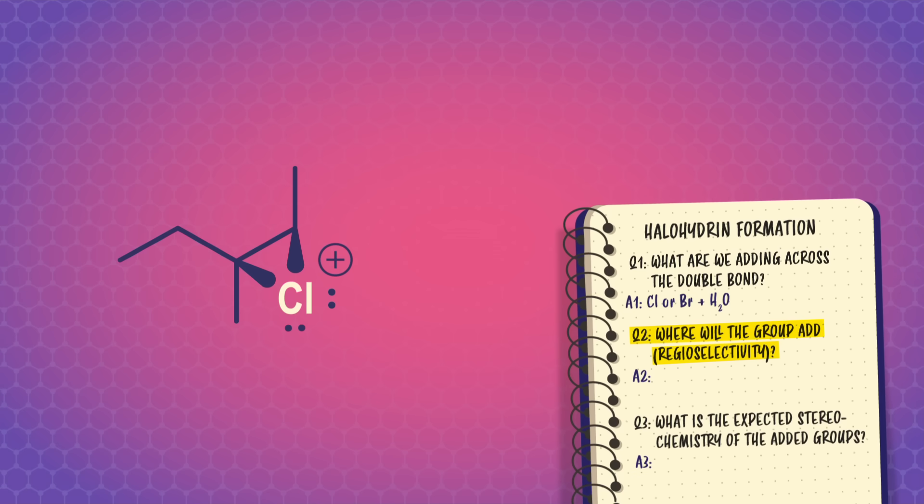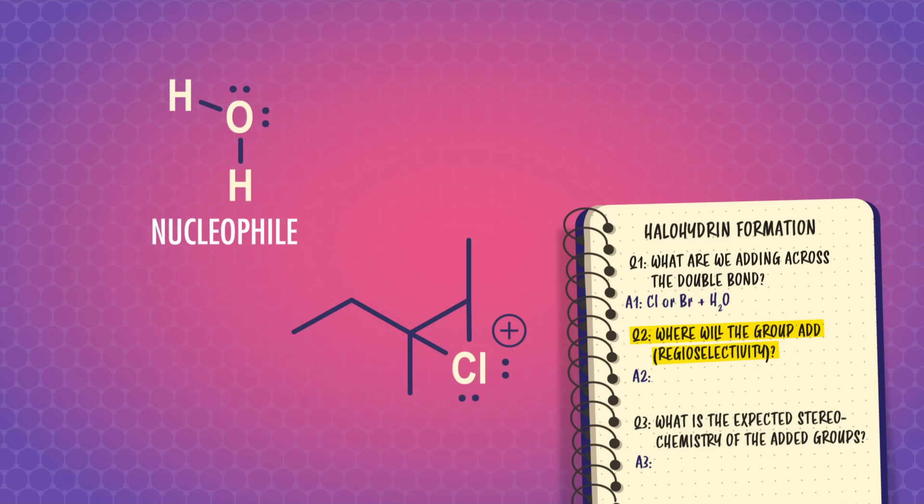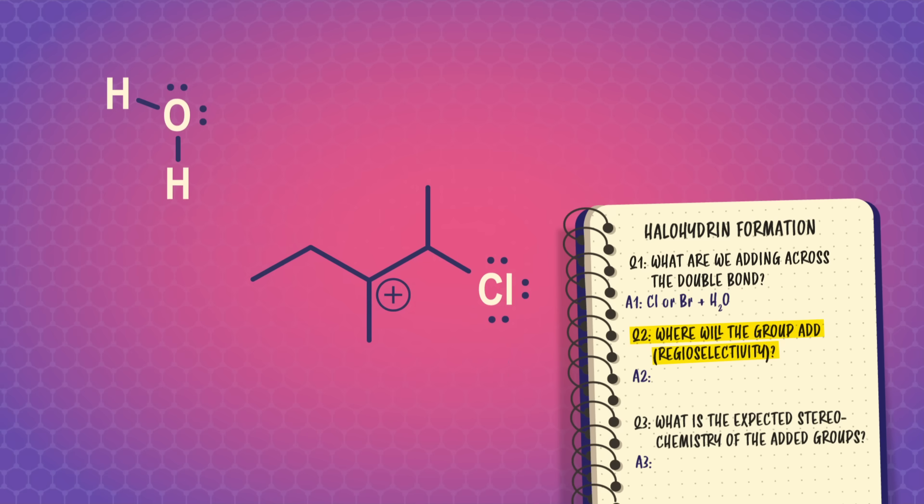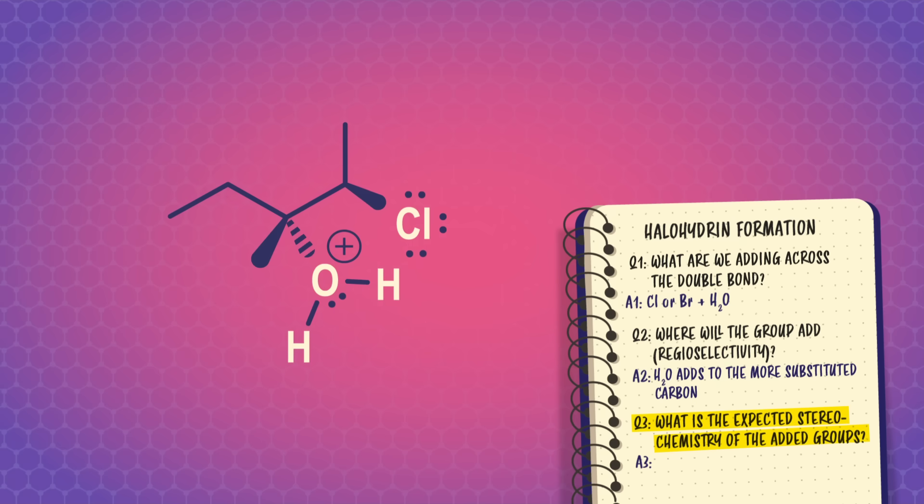The next step in a halohydrin reaction involves a water molecule as our nucleophilic attacker. Oxygen's lone pair is going to attack at the side where we can draw a carbocation that contributes more to the resonance hybrid, which is the tertiary one. So we would expect water to add to the more substituted side of the bond, and this reaction is regioselective. For question number three, the chloronium ion blocks syn addition, so the water molecule adds anti.